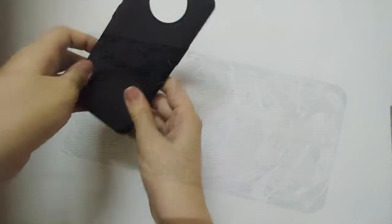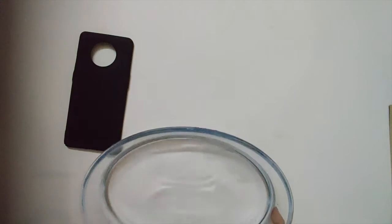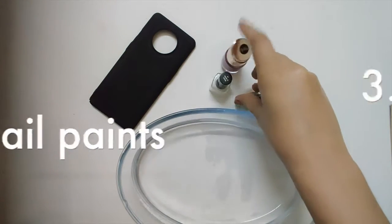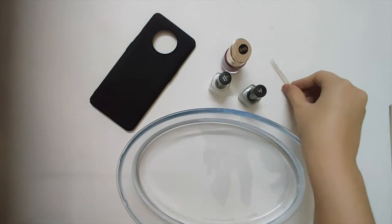The things you'll need are one phone cover. I'm using a black matte phone cover, a bowl of water, basically any container that can accommodate your phone cover, some nail paints, and a toothpick to make swirls in your pattern.